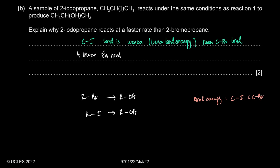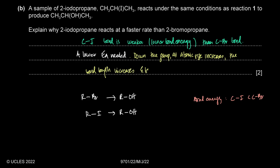Down the group, as atomic size increases, bond length increases and bond energy decreases. So the C–I bond has lower bond energy than C–Br, requiring lower activation energy and giving a faster rate of reaction.